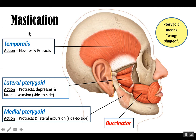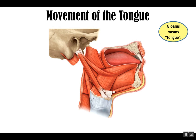Recall that the temporalis is the one that does retraction, and then the masseter as well as the temporalis do the elevation of the mandible. So now you can do all kinds of things with that mandible when you're chewing your food. In the next video, we're going to look at muscles of the tongue and then move on from there.